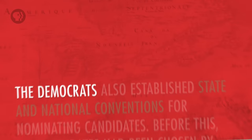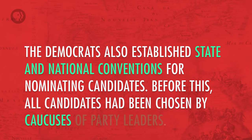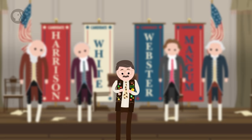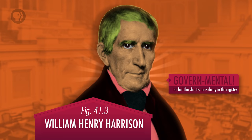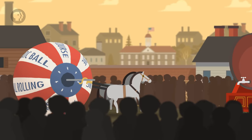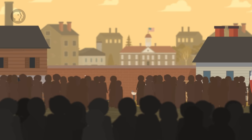The Democrats also established state and national conventions for nominating candidates. Before this, all candidates had been chosen by caucuses of party leaders, which is less democratic. The Whigs were generally less successful in national elections, but they introduced flair into politics in the campaign of 1840. This was the first time a Whig candidate, William Henry Harrison, won the presidency, and he introduced a great deal of political theater into running for office. The Whigs held parades featuring a rolling model of a log cabin and copious amounts of hard cider, and a giant ball covered in campaign slogans that spawned the phrase 'keep the ball rolling,' giving us the first campaign slogan with both rhyming and alliteration: 'Tippecanoe and Tyler Too.'